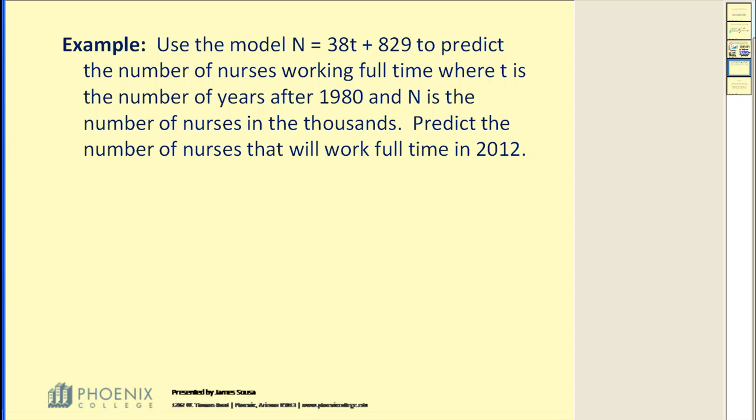Okay, so we have a similar situation here. We need to figure out what we're going to use for the value of T. Well, T is the number of years after 1980. So I'll take the year that we want and subtract our base year, and we can see that's going to give us 32. We're going to replace T with the value of 32.